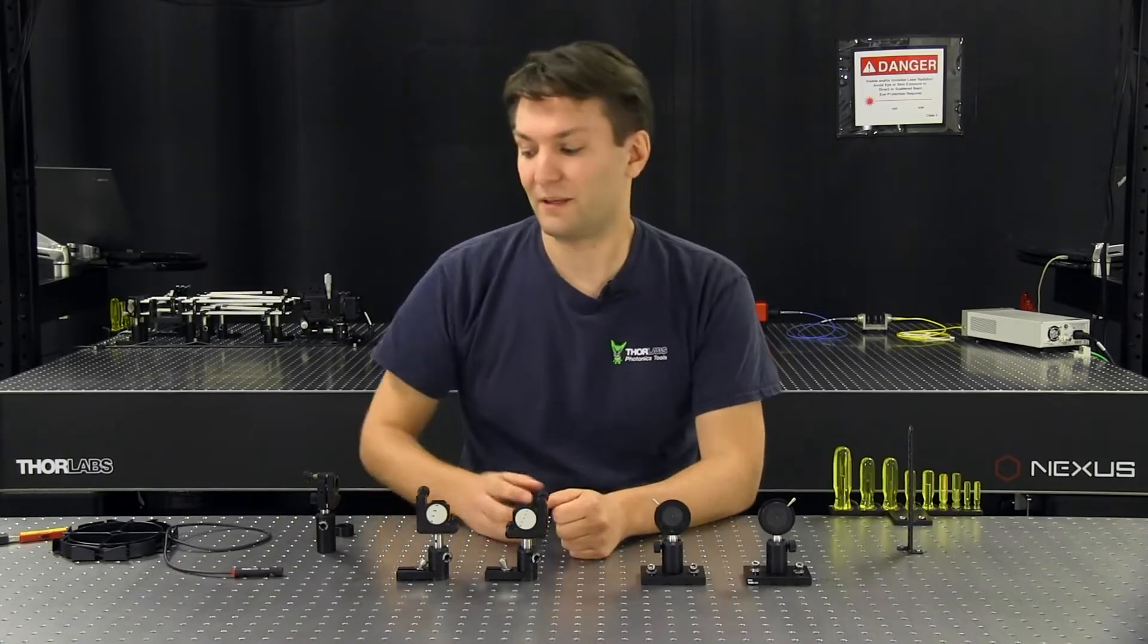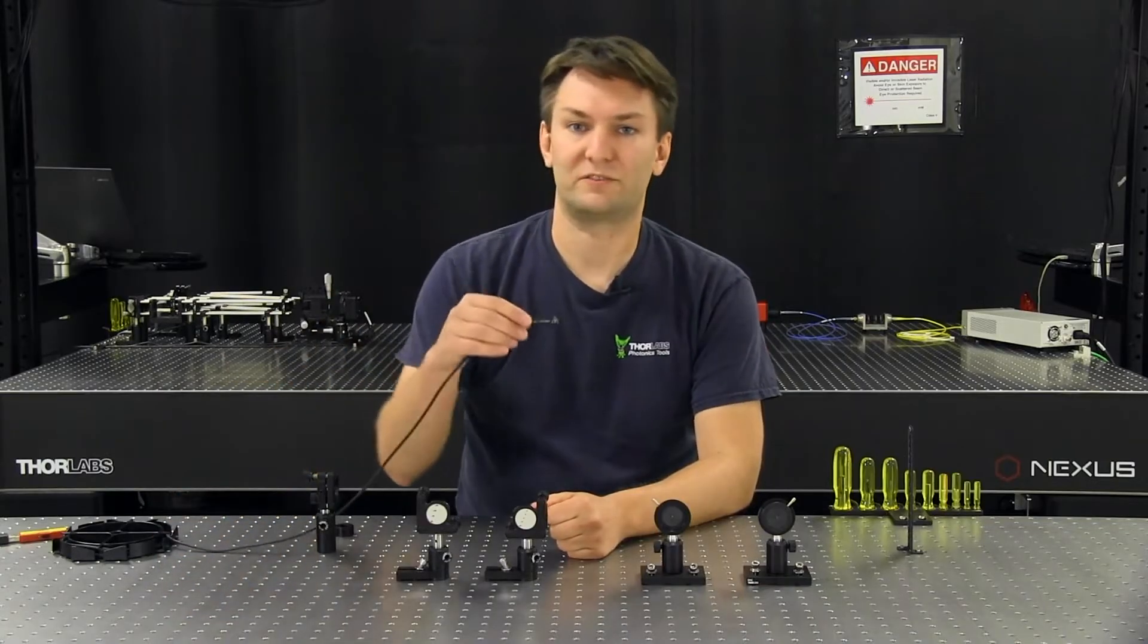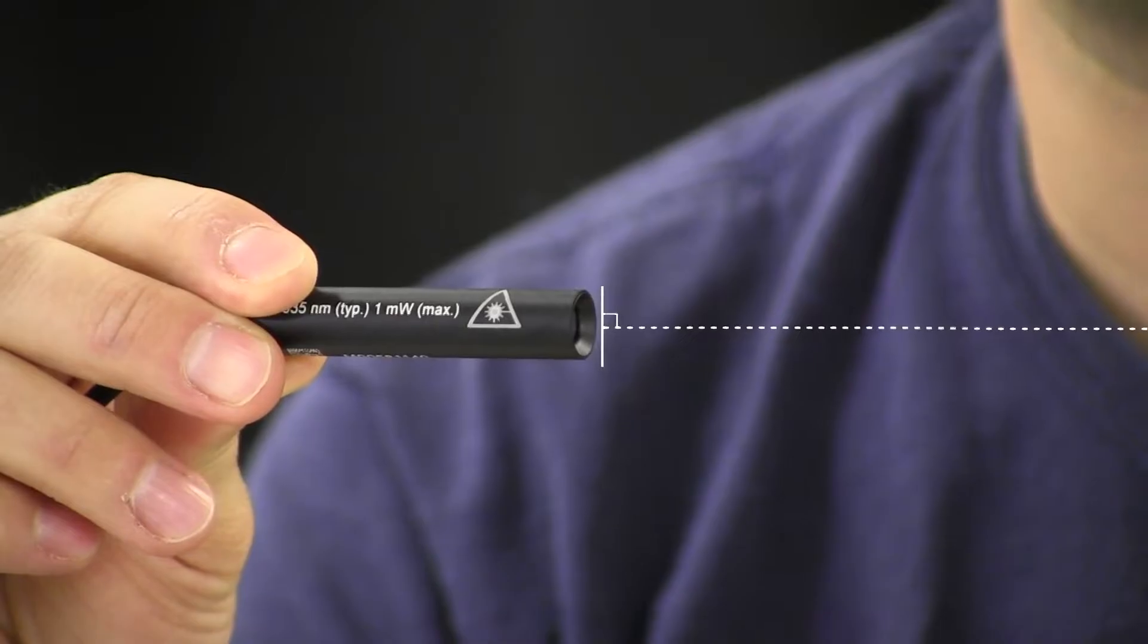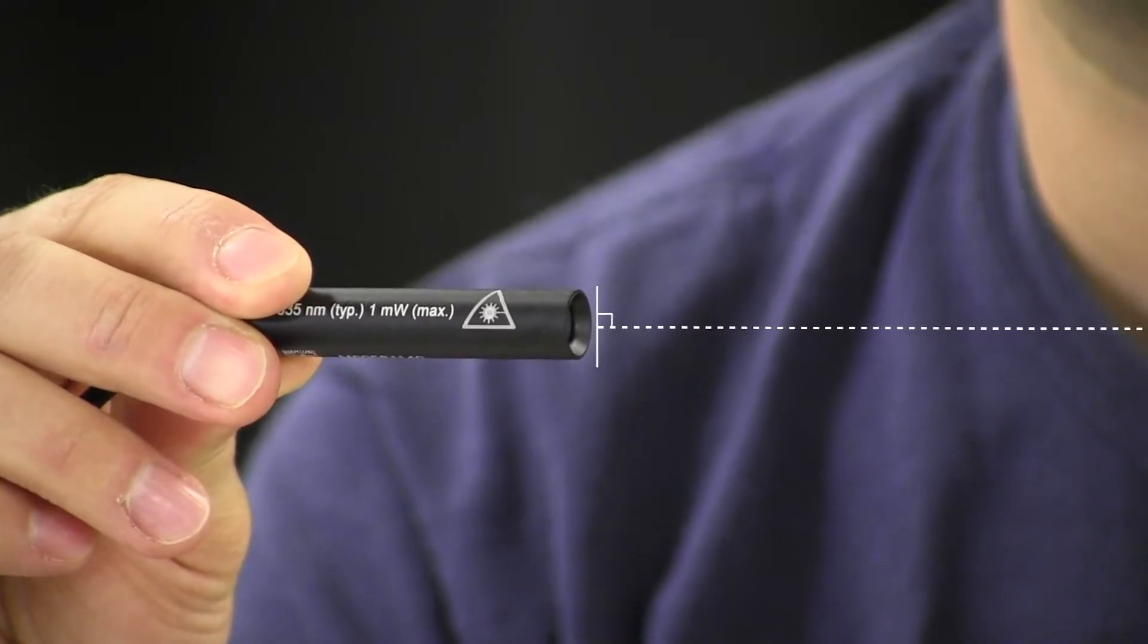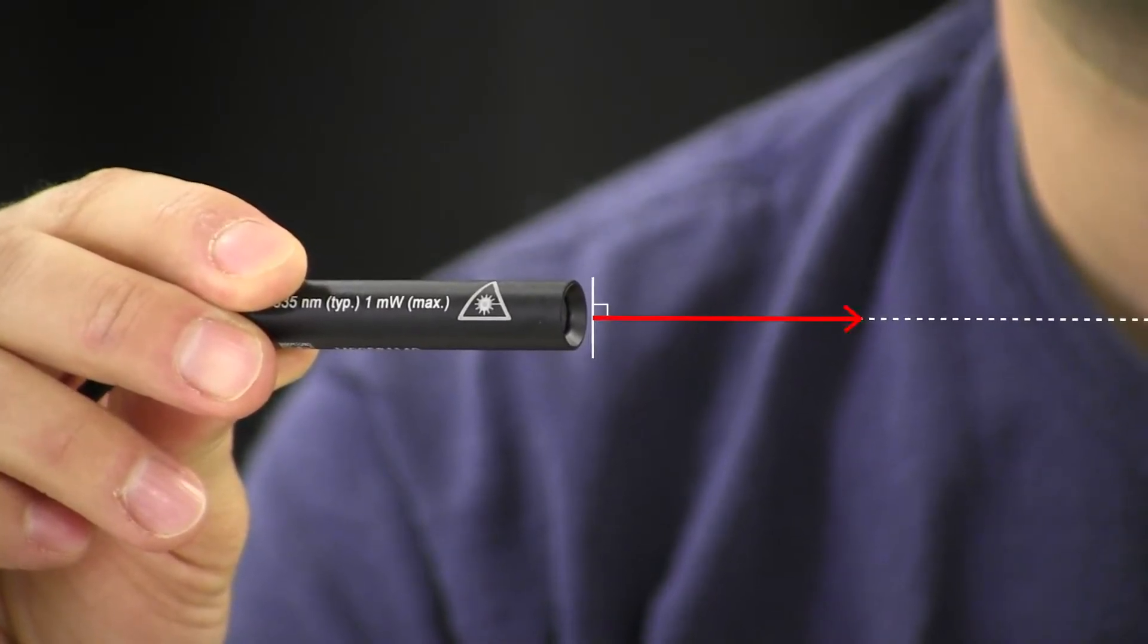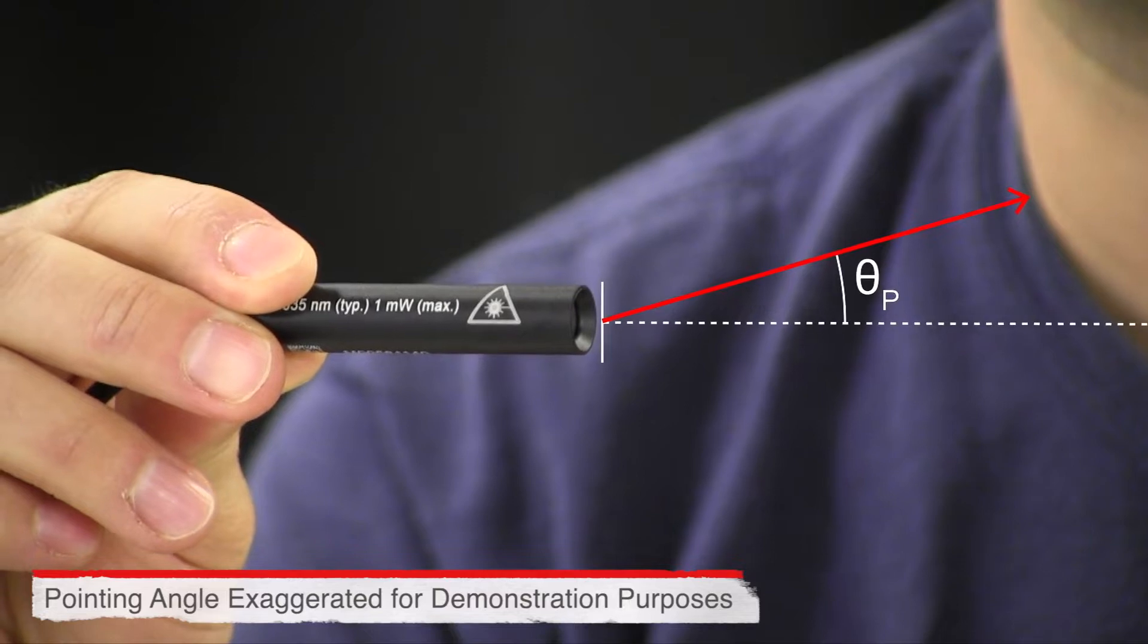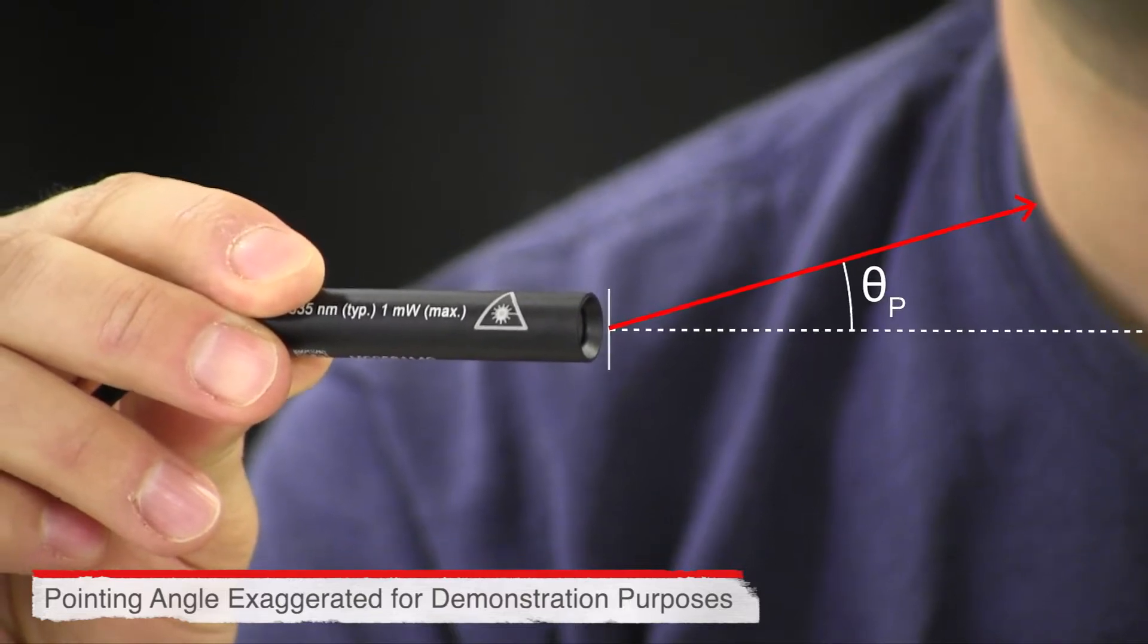So with our collimated laser diode packages and our fiber collimators, we have what's called a pointing angle. We have the package in the front face, and the hope would be that the light comes out parallel to the normal to that front face of that package. But in reality, the light's going to be pointing at some angle with respect to that normal direction.